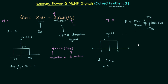To calculate average power we need to set the limits -T/2 and T/2. We choose them such that all amplitude transitions are included. Here we have two amplitude transitions: from 0 to 2 and from 2 to 0. So we place -T/2 and T/2 symmetrically around the origin so that this entire range is covered.